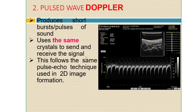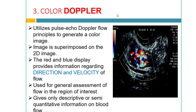Another Doppler mode is pulsed wave mode. Here, a short burst or pulse of sound is produced, using the same crystal to both send and receive the signal. This follows the same pulse-echo technique used in 2D image formation.